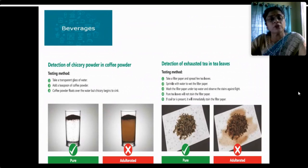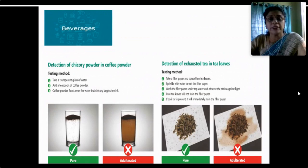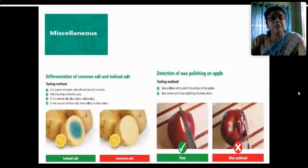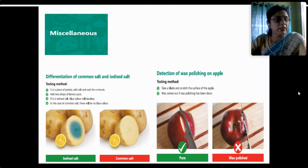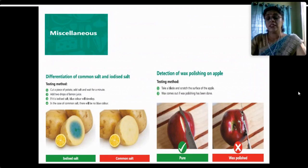To detect malachite green in green chilies and green vegetables: take a cotton piece soaked in water and rub the outer surface of the vegetable — if the cotton turns green, malachite green is present. For grapes: soak a piece in a glass of water for half an hour and observe color separation, which shows the presence of artificial color. For coffee and chicory: add a teaspoon of coffee powder to a transparent glass of water — pure coffee powder floats on water while chicory begins to settle. For tea: spread tea leaves on filter paper, sprinkle with water, then wash under tap water — if coal tar dye is present, stains will remain; pure tea leaves leave no stain.